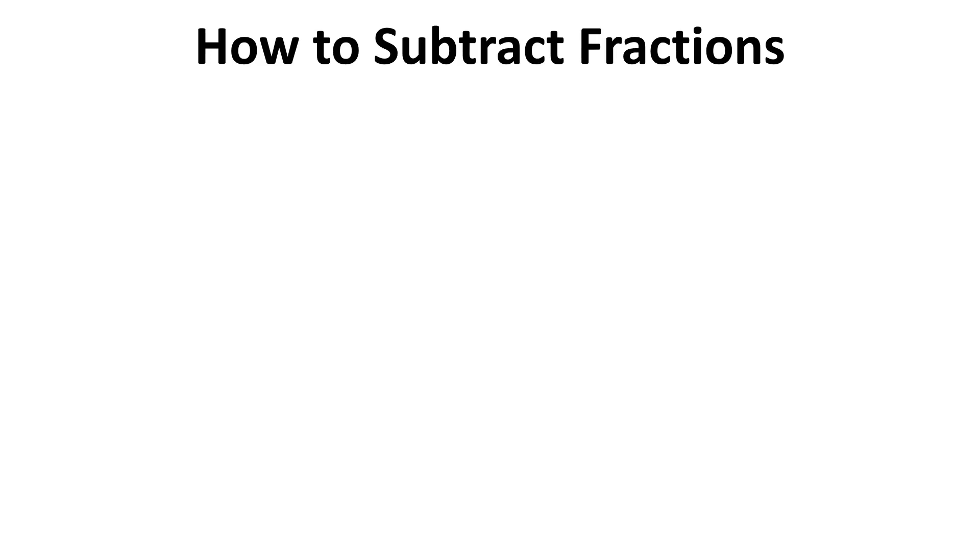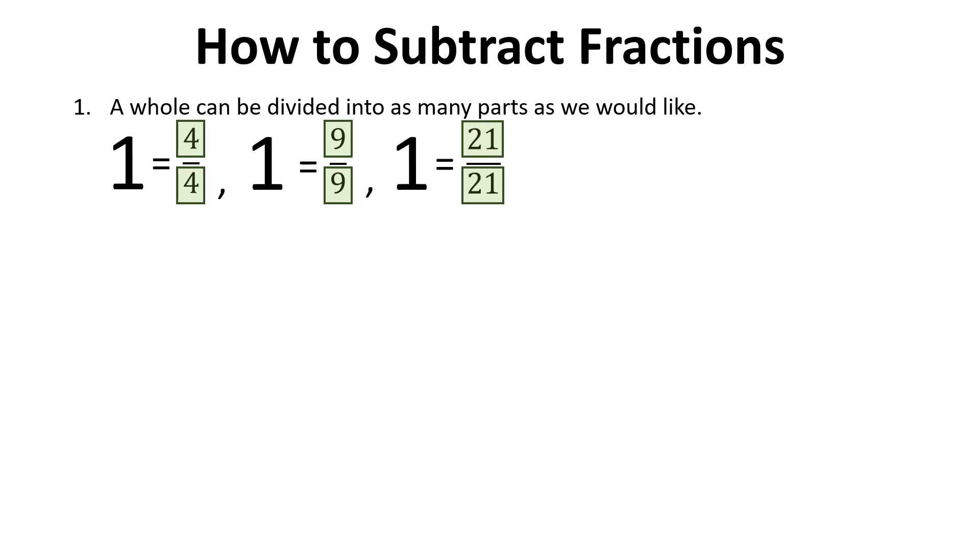How to subtract fractions? A whole can be divided into as many parts as we would like. For example, 1 is equal to 4 over 4, 1 is also equal to 9 over 9, and 1 is also equal to 21 over 21.